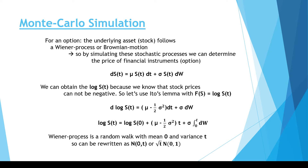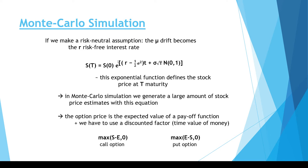The dW is the Wiener process, which is a random walk with mean zero and variance T. It can be written as the normal distribution with mean zero and variance T, which is equivalent to the square root of T times the standard normal distribution. The solution of this equation is going to be an exponential function.